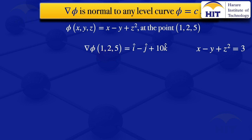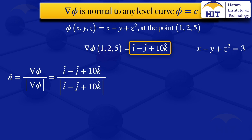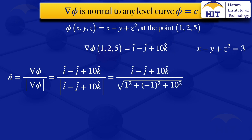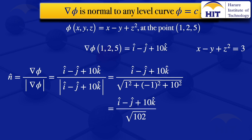But the question asks for the unit normal. To find a unit normal vector from any vector, we divide that vector by its norm. So the unit normal is grad phi divided by the norm of grad phi, which is (i minus j plus 10k) divided by the norm of (i minus j plus 10k). Evaluating the denominator gives the square root of 1 squared plus (minus 1) squared plus 10 squared, which equals the square root of 102. Therefore, the unit normal to the surface x minus y plus z squared equals 3 is (i minus j plus 10k) divided by the square root of 102.